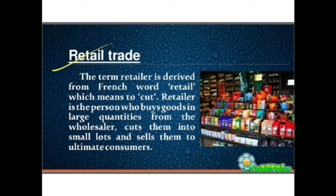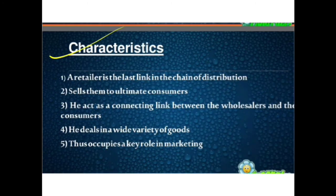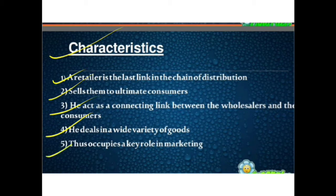The retailer sells goods to ultimate consumers. Now, the characteristics of a retailer: a retailer is the last link in the chain of distribution. He sells the products to ultimate consumers and acts as a connecting link between the wholesalers and the consumers. He deals in a wide variety of goods, buys and sells in small quantities, and deals in a large variety of goods.